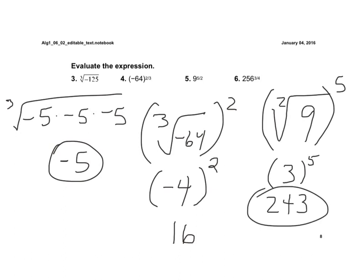And number 6, that denominator, the index, is the fourth root of 256, and the fourth root of 256 would be 4. And then that's 4 to the third power would be 64.